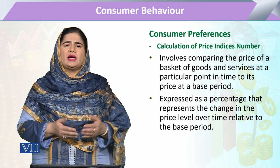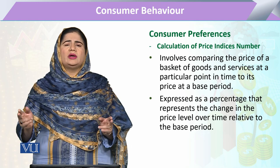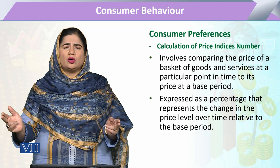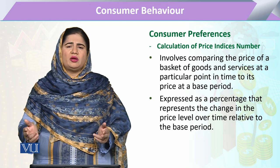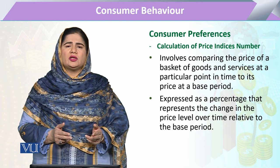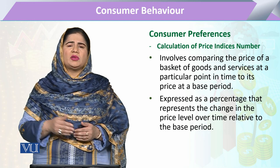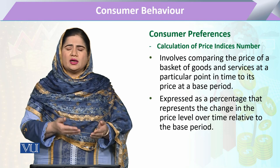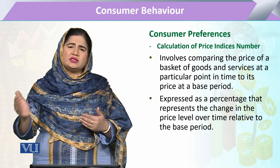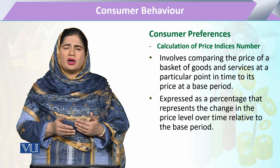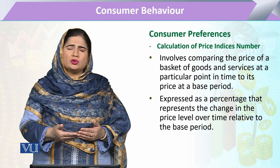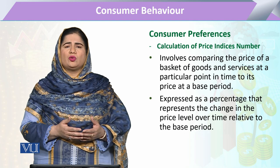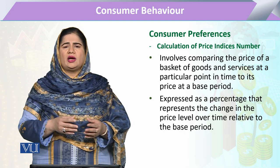We compare two time frames — one is the base period and the other is the current period. We have two commodities, two bundles, and two time frames. The prices at the base period are compared with the prices at the current time. Over time, from base to current, if prices have reduced or increased, when we express this change as a percentage, that will be our price index.